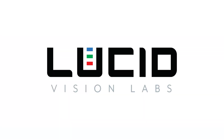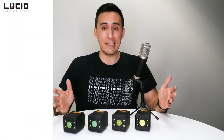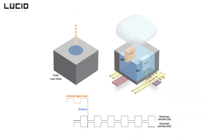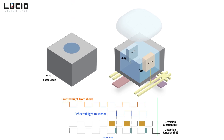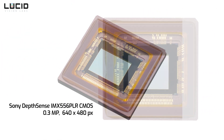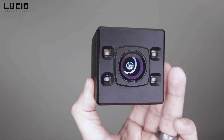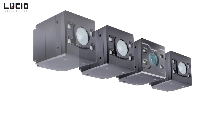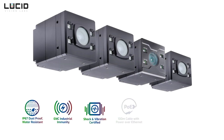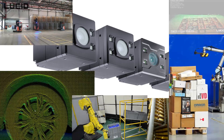Before we get into the individual differences, let's go over some of the key similarities. All Helios II models use indirect phase-measuring time-of-flight technology to produce 3D data. They all feature Sony's DepthSense IMX556 PLR TOF sensor. All models are compact, lightweight, have an M12 GigE port and an M8 GPIO port. All models also provide IP67 dust and water protection and are built to factory-tough standards, making them perfect for many industrial applications.